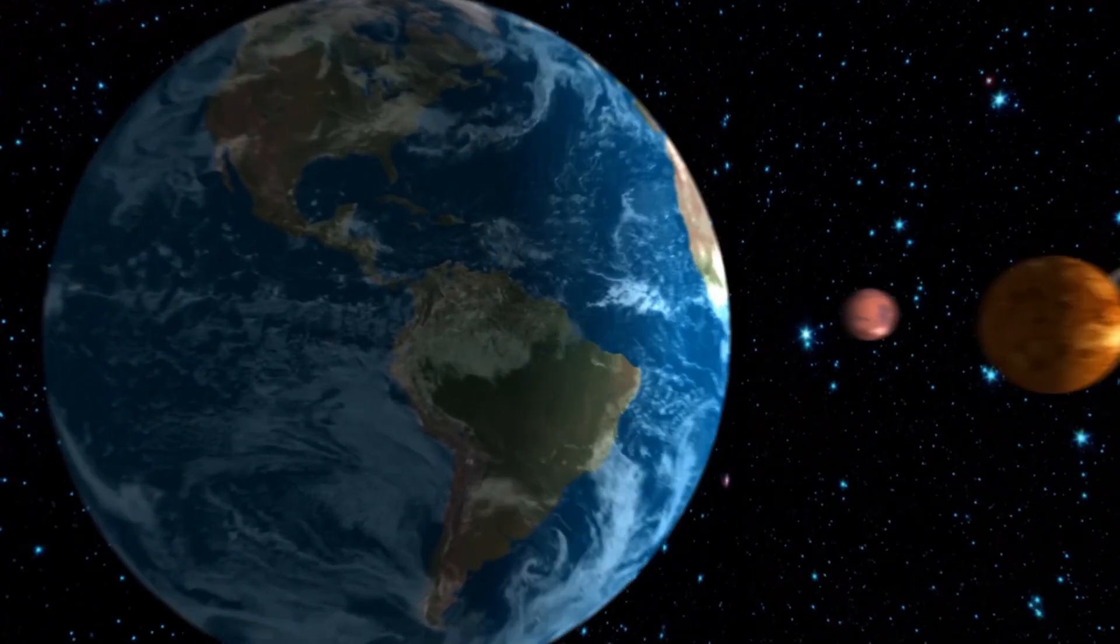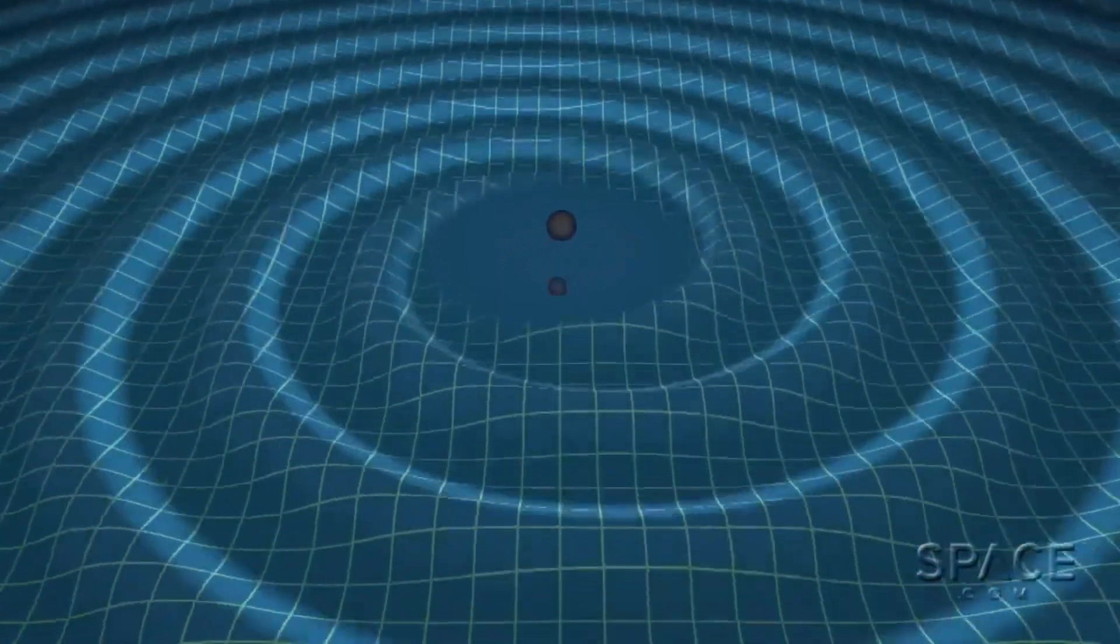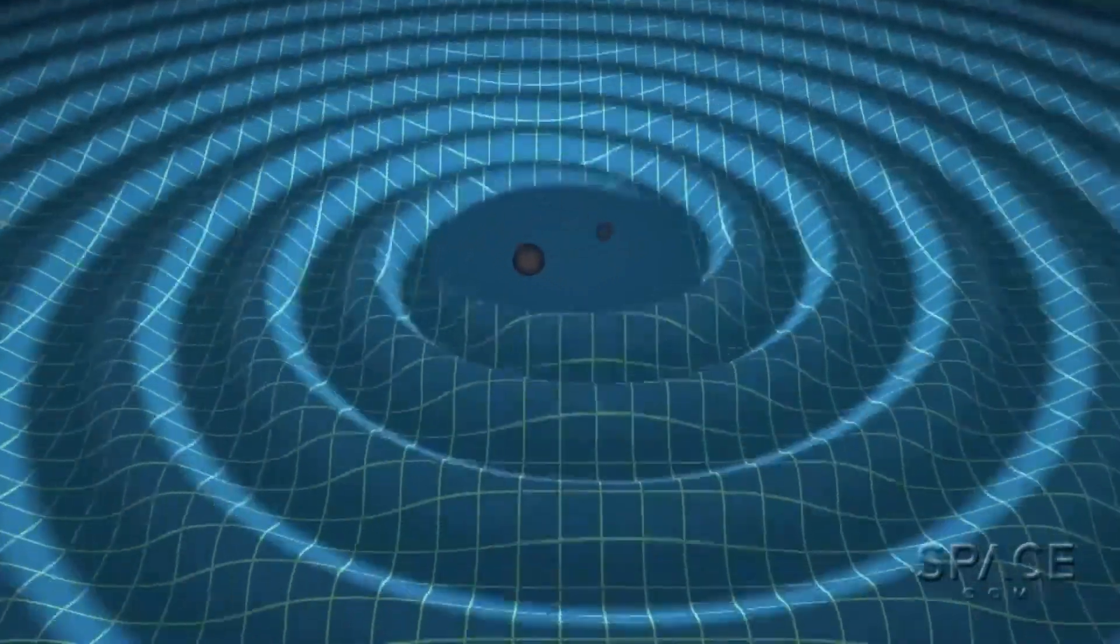Our sun and the solar system will likely be flung into a new orbit, but survival chances are high. And the supermassive black holes at the centers of the galaxies will merge, sending out gravitational waves.